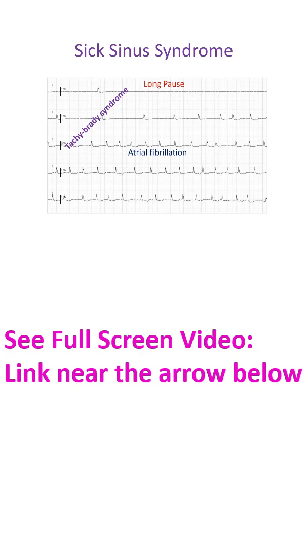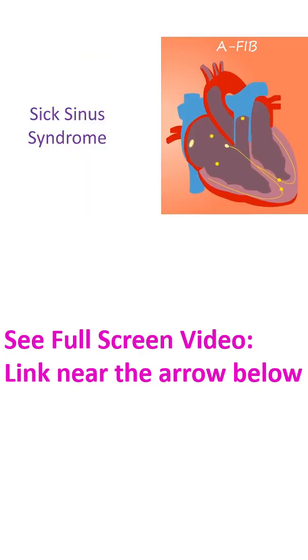Tachy means fast and brady means slow. Atrial fibrillation, known in short as AFib, causes almost standstill of the upper chambers. This is because the upper chambers cannot contract well along with the very fast electrical activity.